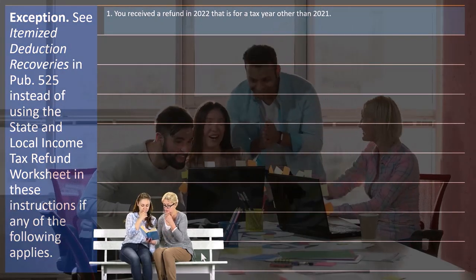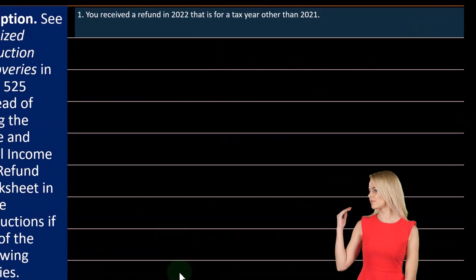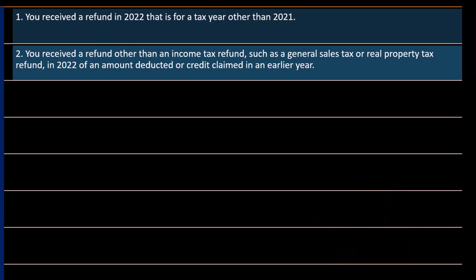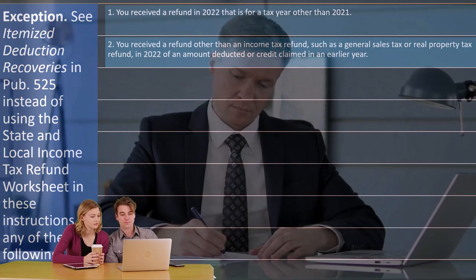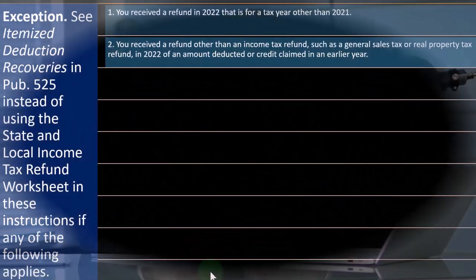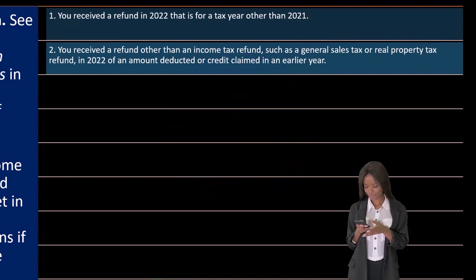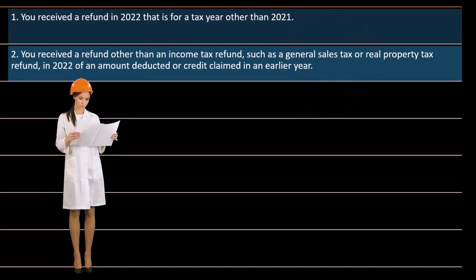See itemized deduction recoveries in Publication 525. You can find it on the IRS website. Instead of using the state and local income tax refund worksheet in these instructions, use Publication 525 if any of the following applies: Number one, you received a refund in 2022 that is for a tax year other than 2021. This can happen with late-filed returns — for example, if someone filed a 2020 return late and received a refund in 2022. You also use Publication 525 if you received a refund other than an income tax refund — such as a general sales tax or real estate tax refund in 2022 — of an amount deducted or credited in an earlier year.